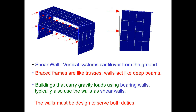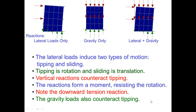A typical analysis performed on ANSYS software shows the behavior of the shear wall under lateral load. The shear wall acts as a vertical cantilever from the ground, and the braced frame acts like a deep beam. Buildings that carry gravity loads using bearing walls also typically use these as shear walls, and the wall must be designed to serve both duties. Load combinations considered include lateral load only, gravity load only, and the combination of both.